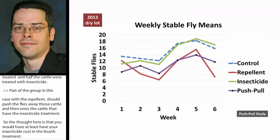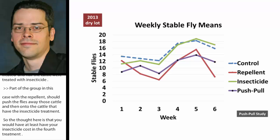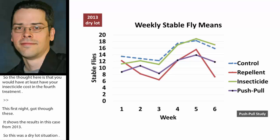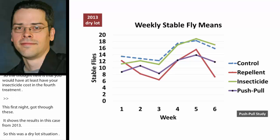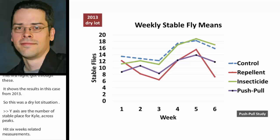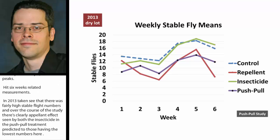Results from 2013 show dry lot conditions with fairly high stable fly numbers over six weeks of measurement. Over the course of the study, there was clearly a repellent effect seen in both the insecticide and the push-pull treatment, which had the lowest fly numbers. Because pens were relatively close in proximity, flies moved readily from repellent-treated groups to animals without repellent, so a good source of flies was no problem.